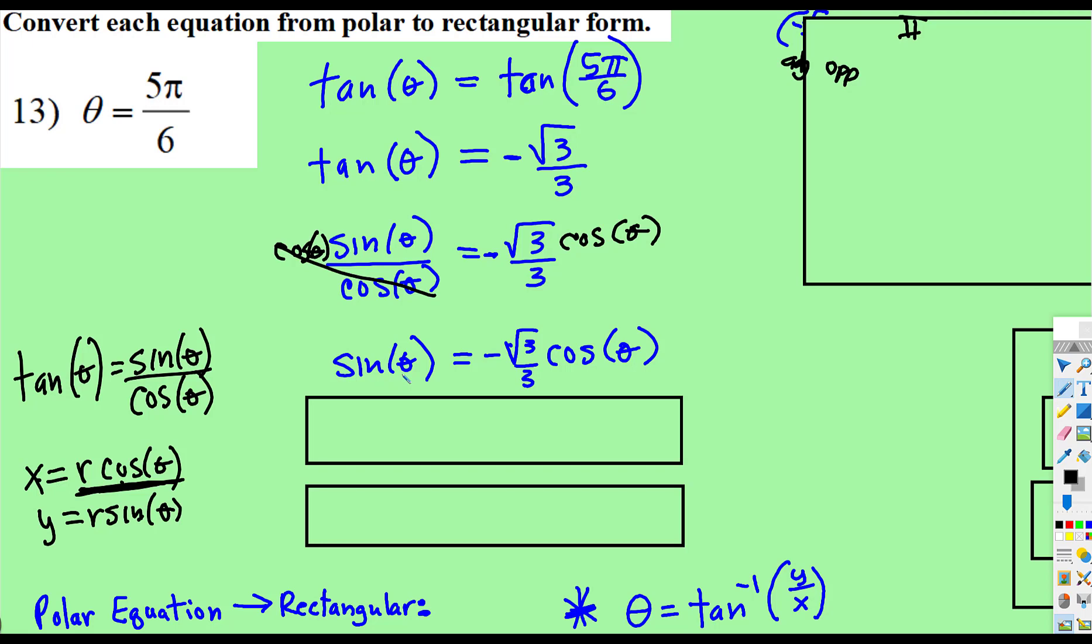Well, that says sin(θ), but we need it to say r sin(θ). That says cos(θ) also has negative √3 over 3, but we're missing the r, and remember,